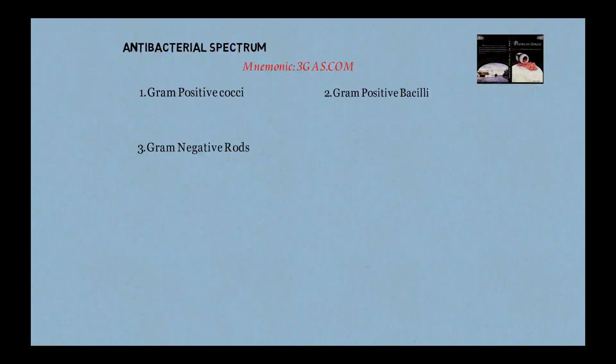For the antibacterial spectrum, think of two armies: our tetracyclines (tetracycline, minocycline, doxycycline, demeclocycline) versus the enemy bacteria. The enemy mnemonic is '3gas.com': 3G = gram-positive cocci, gram-positive bacilli, gram-negative rods; G = anaerobic organisms; A = atypicals like Chlamydia; S = spirochetes; .com = others like Mycoplasma.